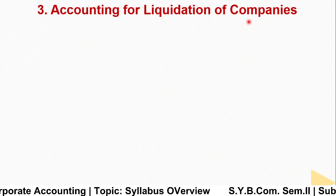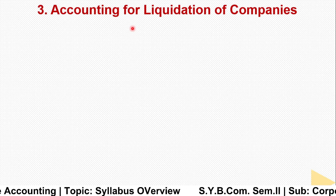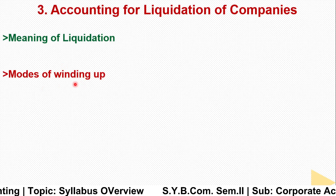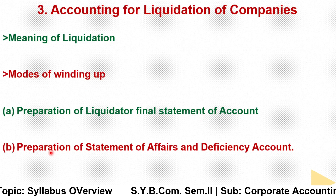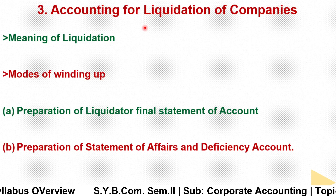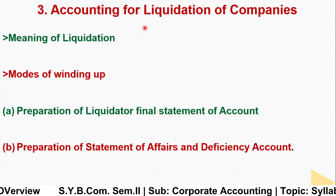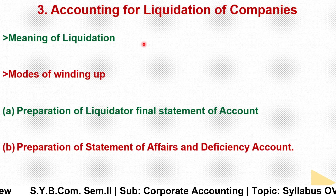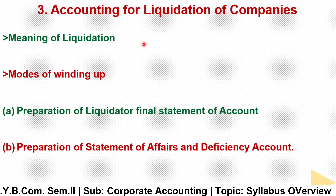Chapter 3 is Accounting for Liquidation of Companies. Here we study the meaning of liquidation and modes of winding up — why a company goes into liquidation and what modes are available. When a company winds up, there are liabilities and assets in the balance sheet. The company must pay all liabilities, and there is a defined priority for payment — to whom we pay first and to whom we pay last.